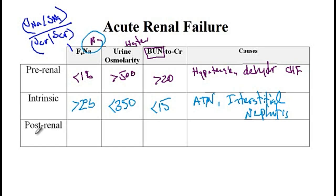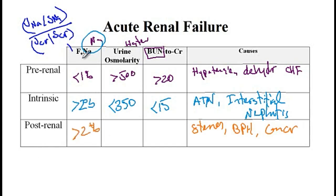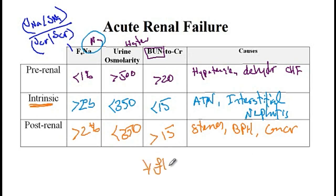Post-renal failure is caused by conditions blocking urine flow such as kidney stones, benign prostatic hyperplasia, or cancer. Fractional excretion of sodium is more than 2% and urine osmolarity is less than 350, similar to intrinsic renal failure, because backup of urine causes renal damage. The only exception is the BUN to creatinine ratio, which is more than 15, because decreased flow rate and increased pressure enhance BUN reabsorption. That concludes our discussion.